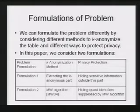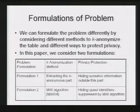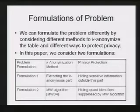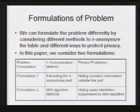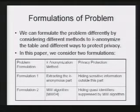The first formulation is extracting the k-anonymous part of the table. The k-anonymous part of the table is just the maximum subset of rows of the table that is k-anonymous. We can view this procedure as k-anonymization. In the first formulation, we want a protocol that implements this extraction in a privacy-preserving way. The privacy protection we want here is to hide the sensitive information outside this k-anonymous part from the miner.